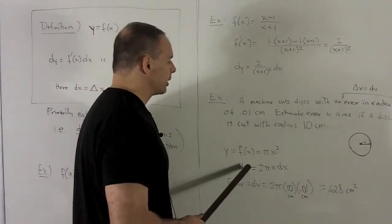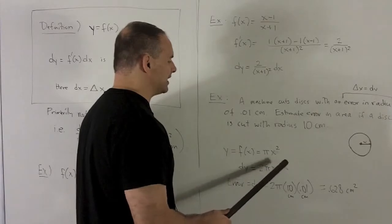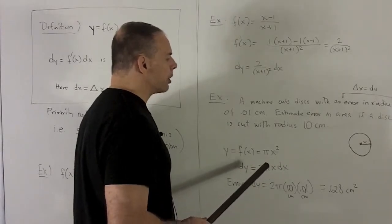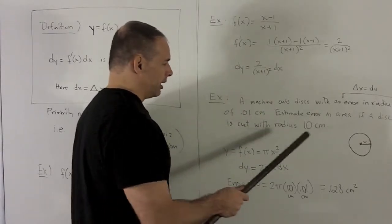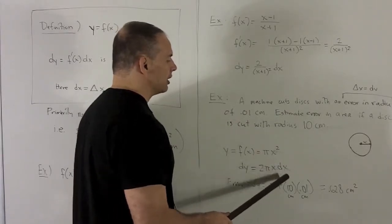So to get the differential, I'm going to take the derivative of this with respect to x. So it gives me 2 pi x dx. And then remember, since I'm doing an actual estimation of error here, dx is going to be the same as delta x.